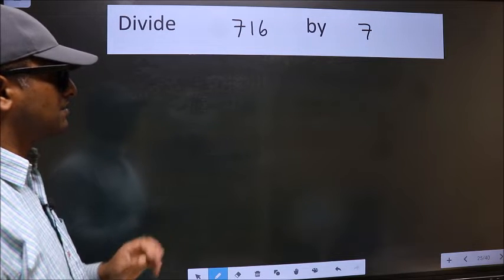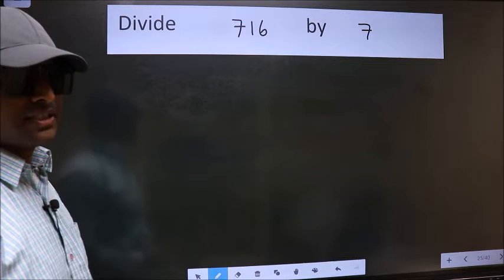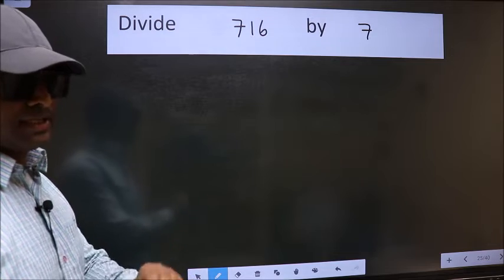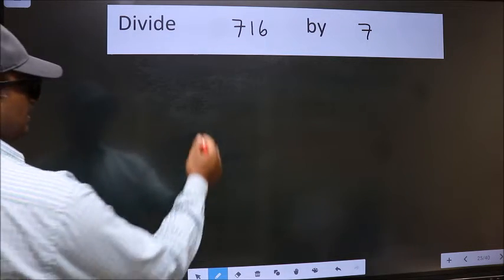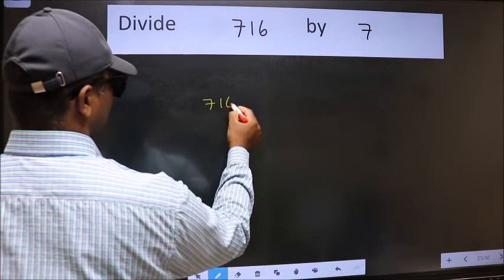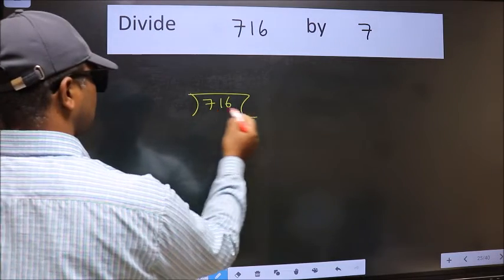Divide 716 by 7. To do this division, we should frame it in this way.